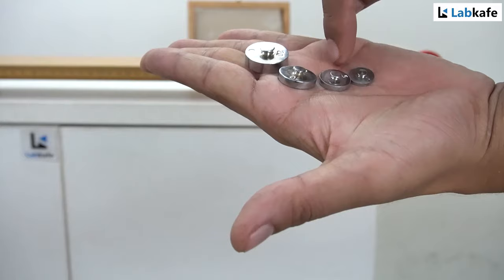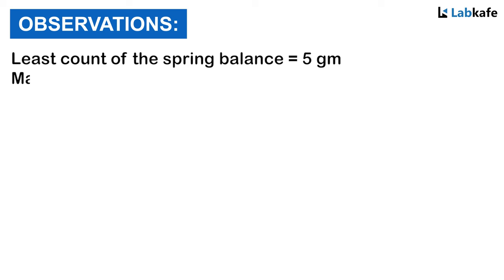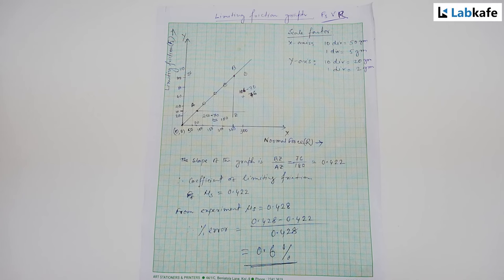So the total weight is 20 plus 10 plus 5 plus 2 grams, which is 37 grams. Similarly, I will take two more sets of data by adding 100 gram and 150 grams of weights on the block. Observations: the least count of the spring balance is 5 grams, the mass of the wooden block M₀ is 105 grams, the mass of the pan M equals 30 grams. The value of coefficient of limiting friction μs between the surface of wooden box and the surface from the table is 0.428.